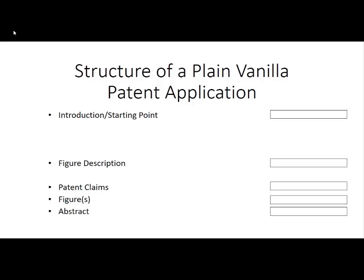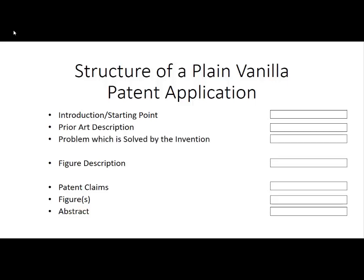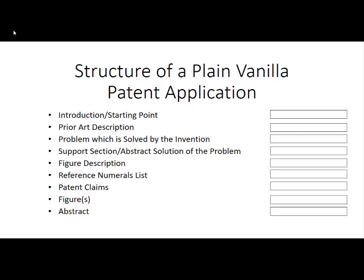In some countries you have additional parts. For instance there is a prior art description, which is also marked by the starting point. And also sometimes we have a problem which is solved by the alleged invention. That problem section is not wanted in the US. Then we have a support section which is an abstract solution or abstract description of the problem, and also gives a link between the figure description and the abstract patent claim wording. In some countries we also have a reference numerals list.